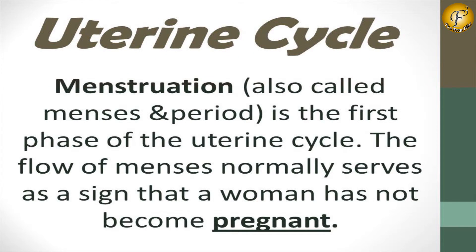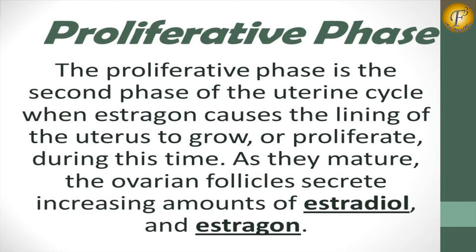The corpus luteum produces progesterone. Menstruation, also called menses or period, is the first phase of the uterine cycle. The flow of menses normally serves as a sign that a woman has not become pregnant.